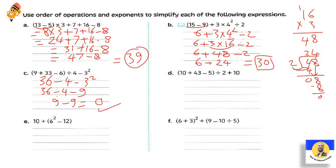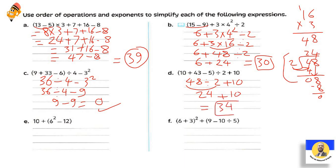The next question: (10 + 43 - 5) ÷ 2 + 10. الـBracket: 10+43 = 53، 53-5 = 48. يبقى 48 ÷ 2 = 24. 24 + 10 = 34. The next: 10 + 6² - 12. الـPower الأول: 6² = 36. يبقى 10 + 36 - 12 = 10 + 24 = 34.